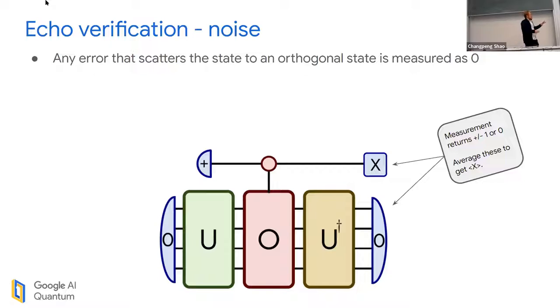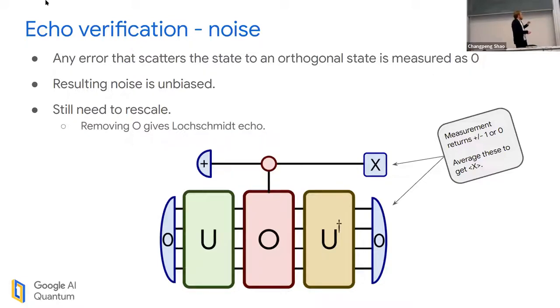This is important because it means I'm not throwing away any information in principle, and it's really important to not discard that data when you do a real experiment. Any error that scatters my state to any orthogonal state - if I get an error that doesn't keep me returning to zero, any bias in my measurement of O gets replaced by zero. This unbiases my noise.